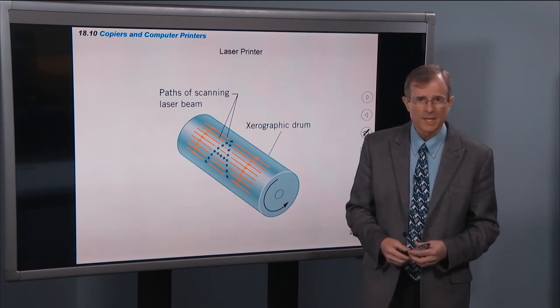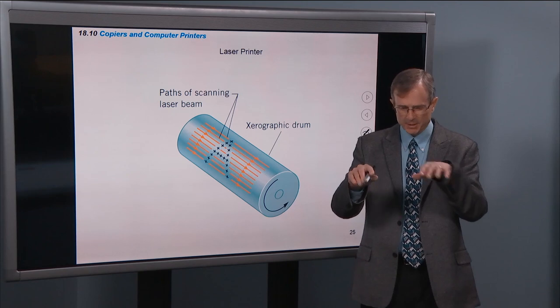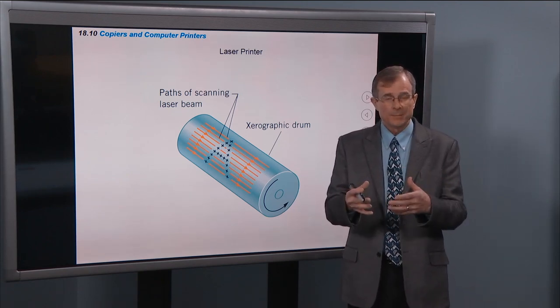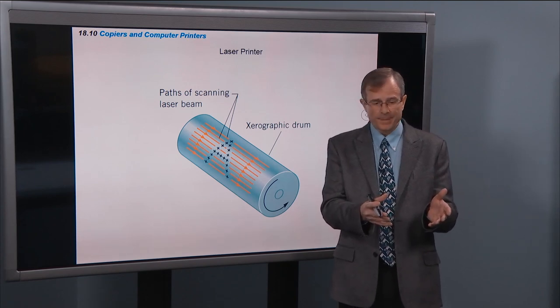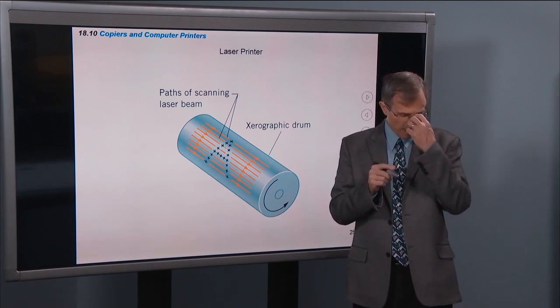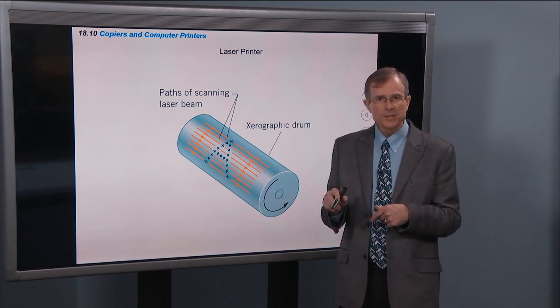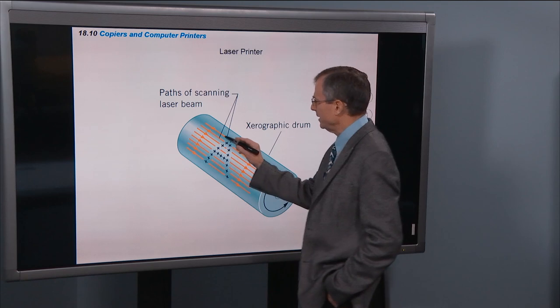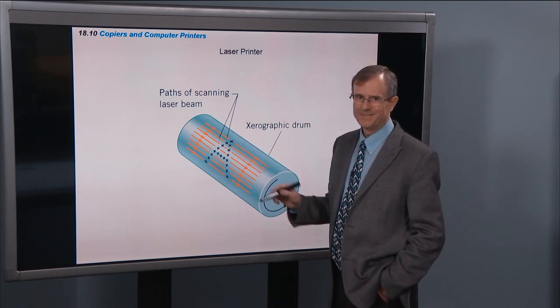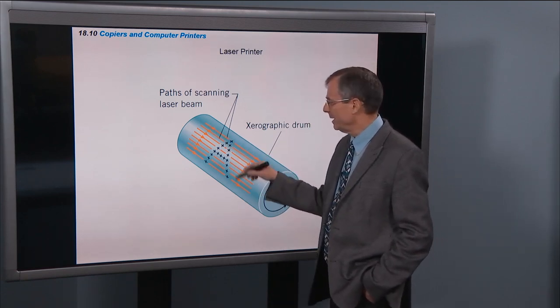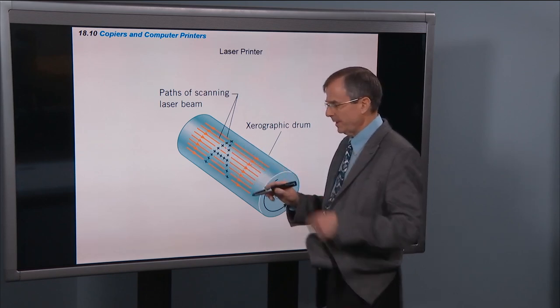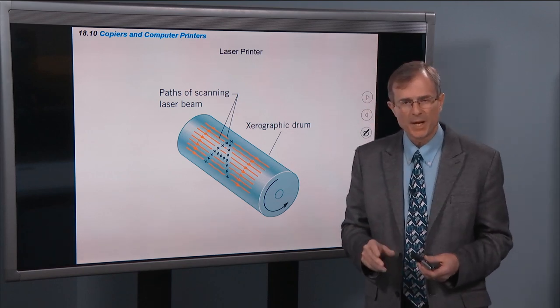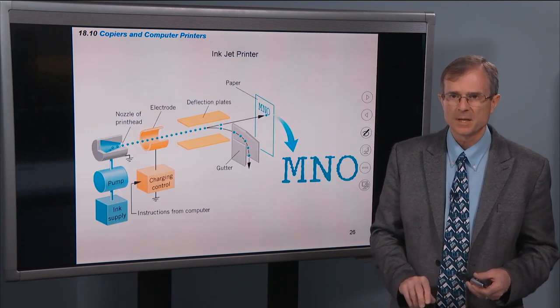A laser printer works in the same way, except you don't have to have all the optics to take a picture of a piece of paper. What you have is the image in software. And then you present that image to a laser and the laser scans across the drum and that light, you scan everywhere where you don't want an image. So that path of the laser beam etches out the area where you don't want toner to be attracted to and then the rest of the process is the same.